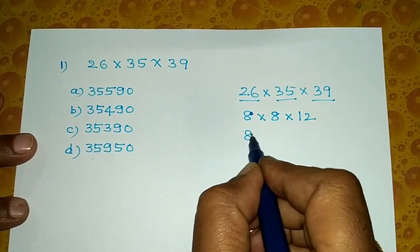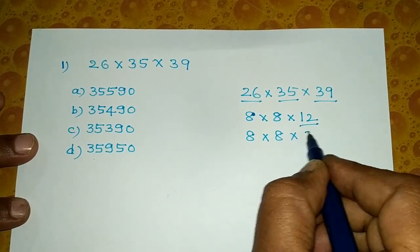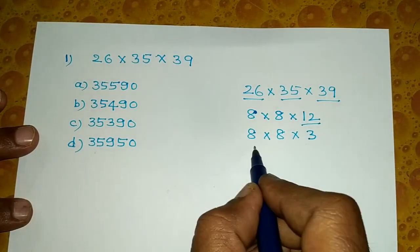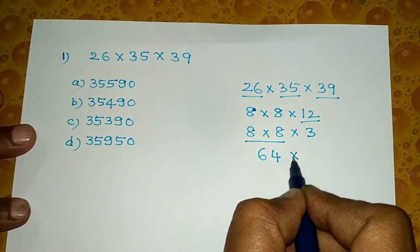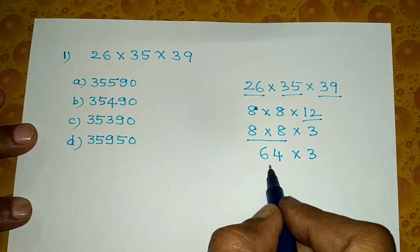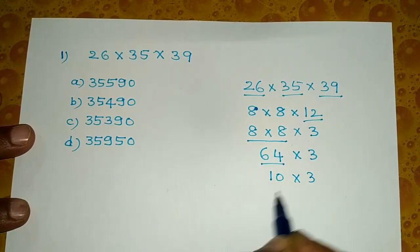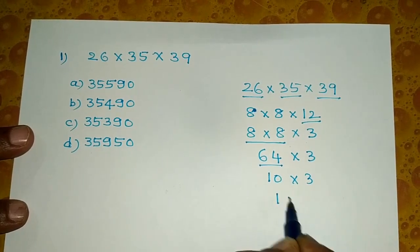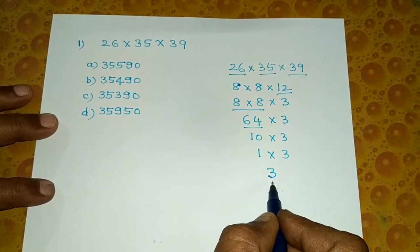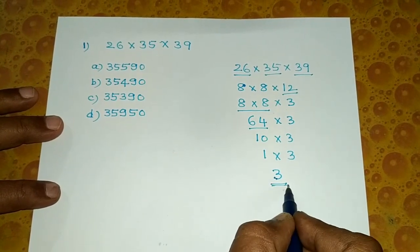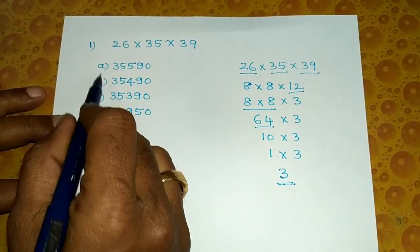Next: 8 x 8 x 3. Then 8 x 8 equals 64. 64 into 3. Next, 6 plus 4 equals 10, into 3. Then 1 plus 0 equals 1, into 3. So 1 x 3 equals 3. Here we have 3. The answer is 3.